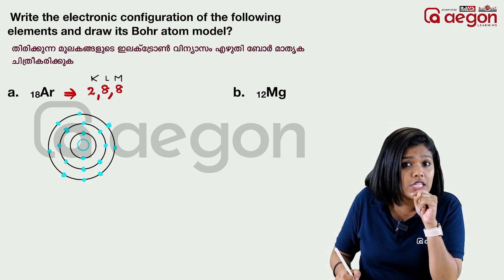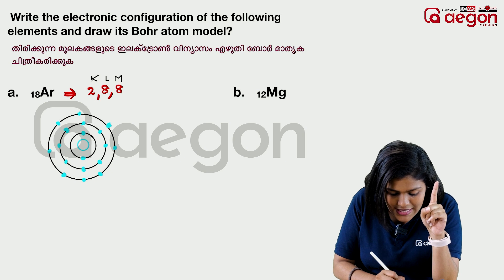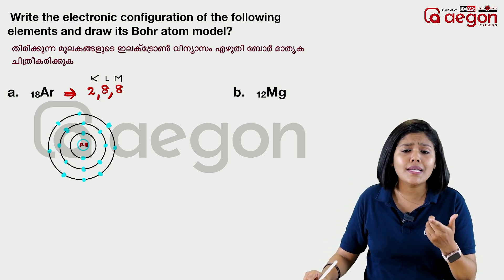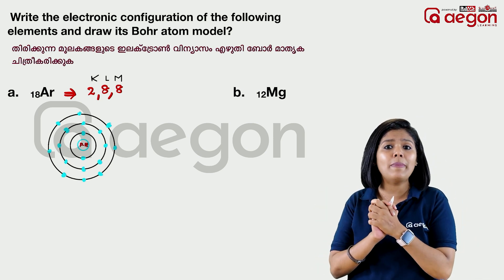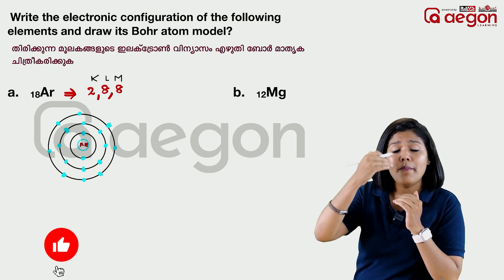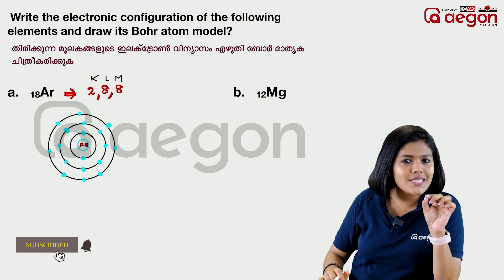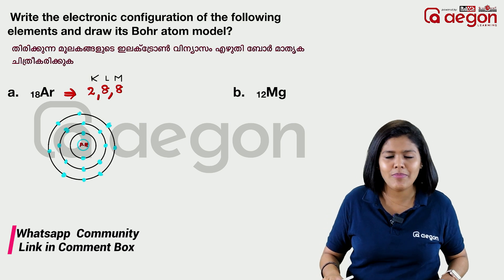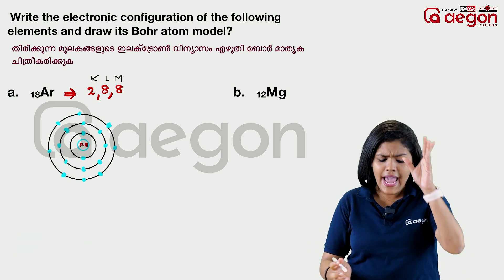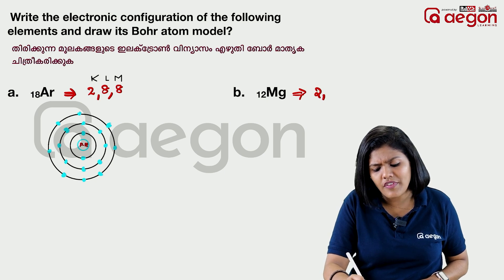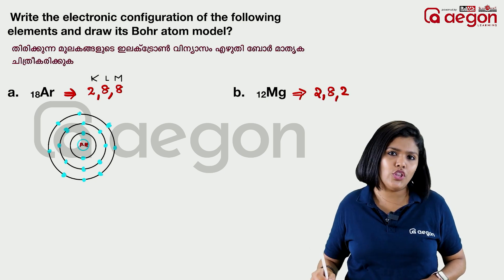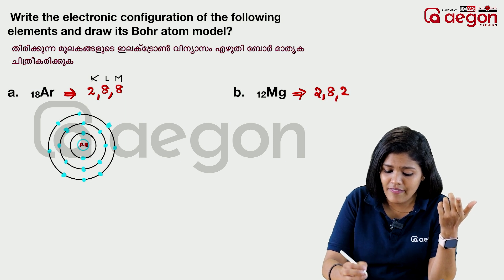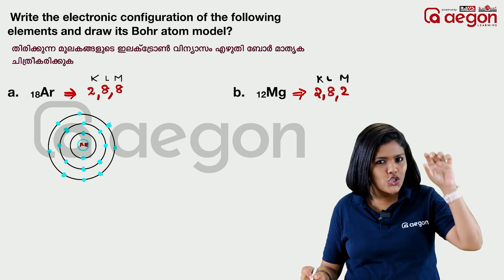Now we are looking at the proton number. The atomic number equals the proton number, which equals the number of electrons. The mass number refers to the nucleus. Neutrons equal mass number minus atomic number. In this example, atomic number is 22. The electronic configuration fits into 3 shells: K, L, M, and we draw the Bohr model with the nucleus and shells.